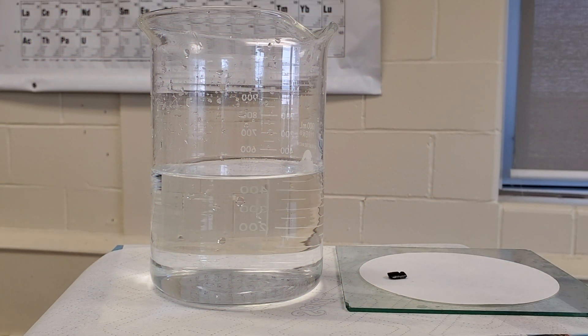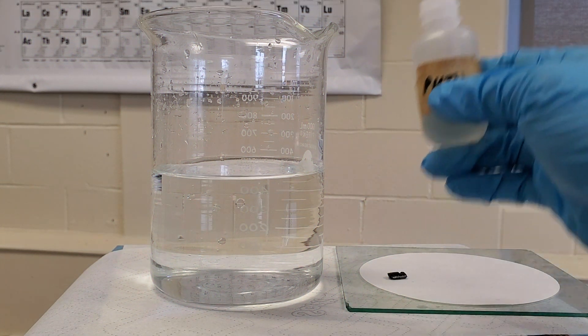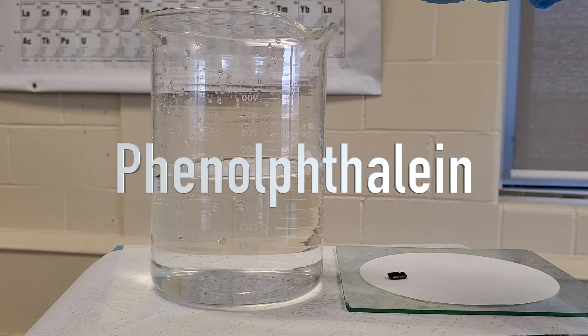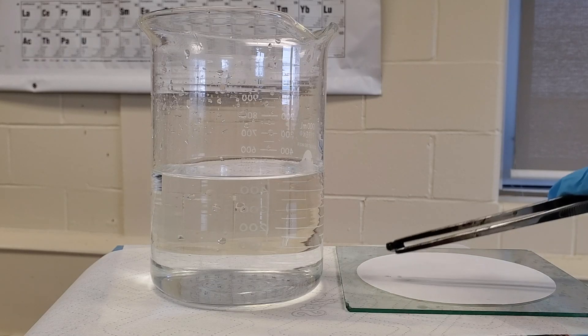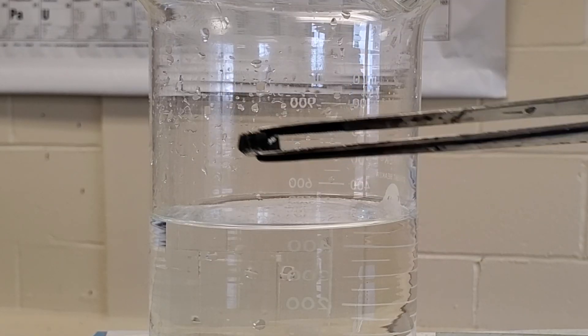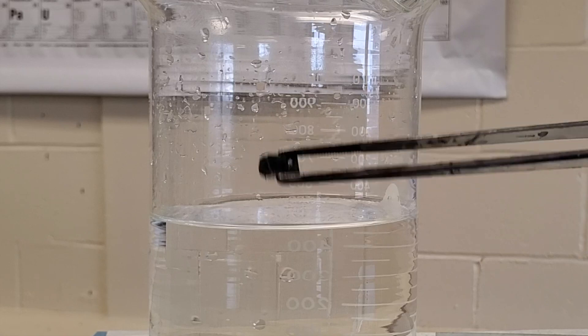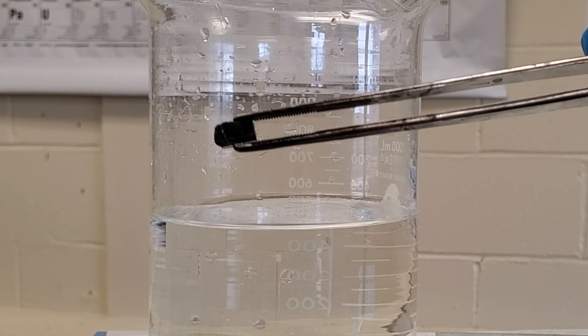Here I have a beaker of water. I'm going to add a drop of phenolphthalein indicator which turns pink in basic or alkali solutions. You can see the lithium sample has already reacted with the oxygen in the air and is no longer shiny but is now dull gray. Let's drop it in.